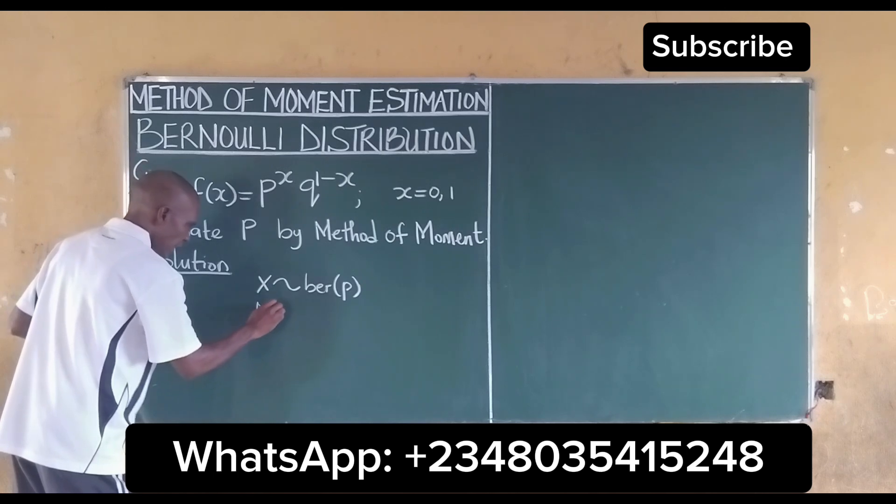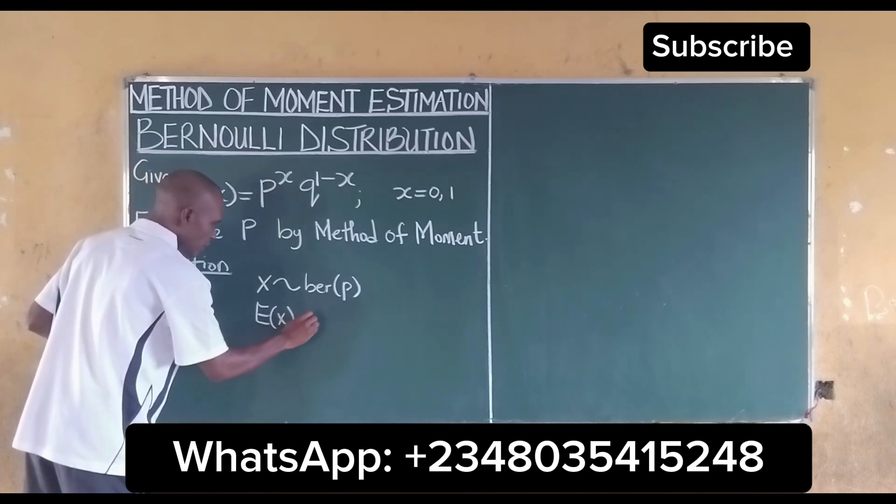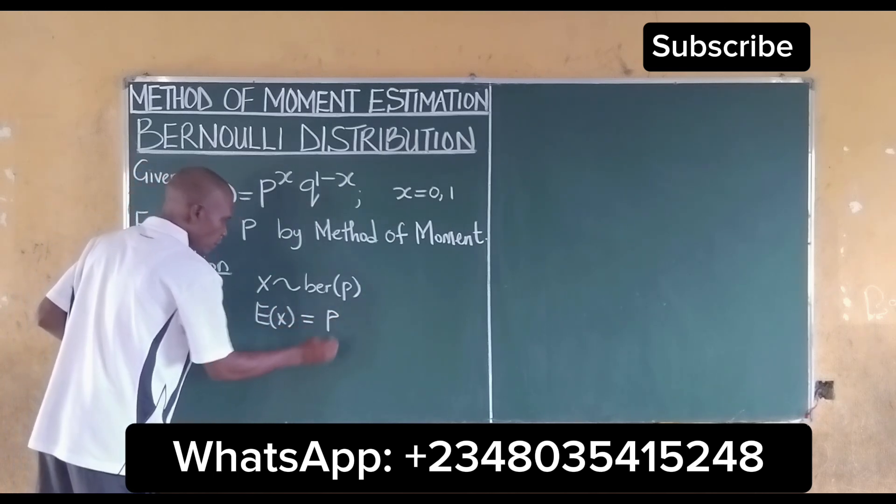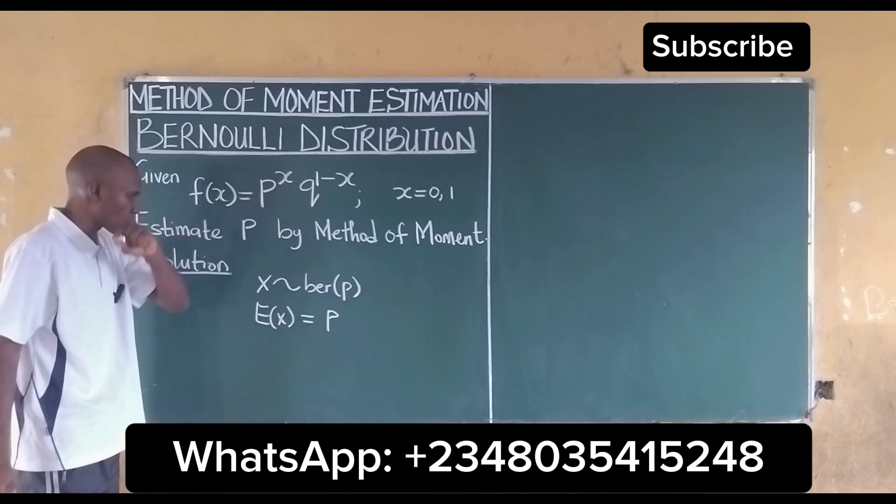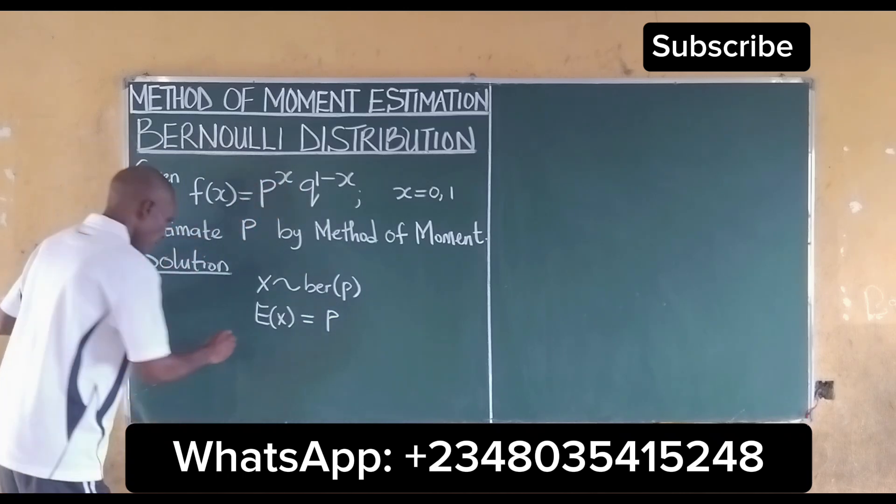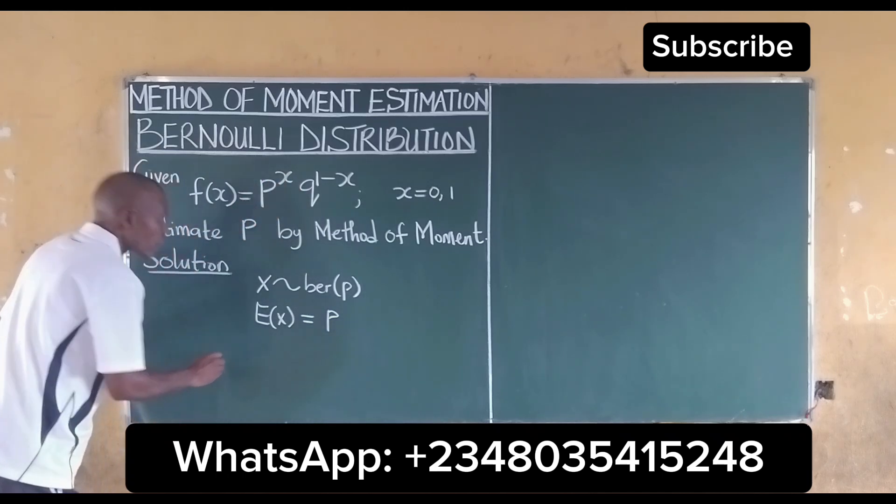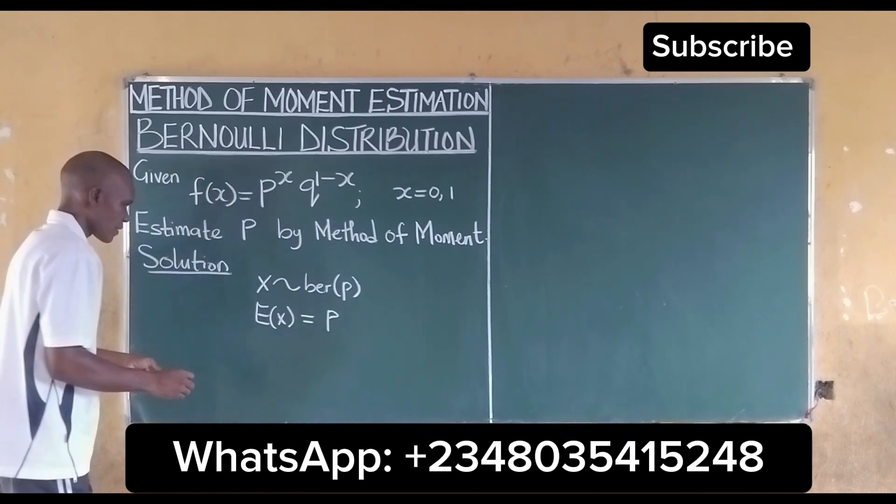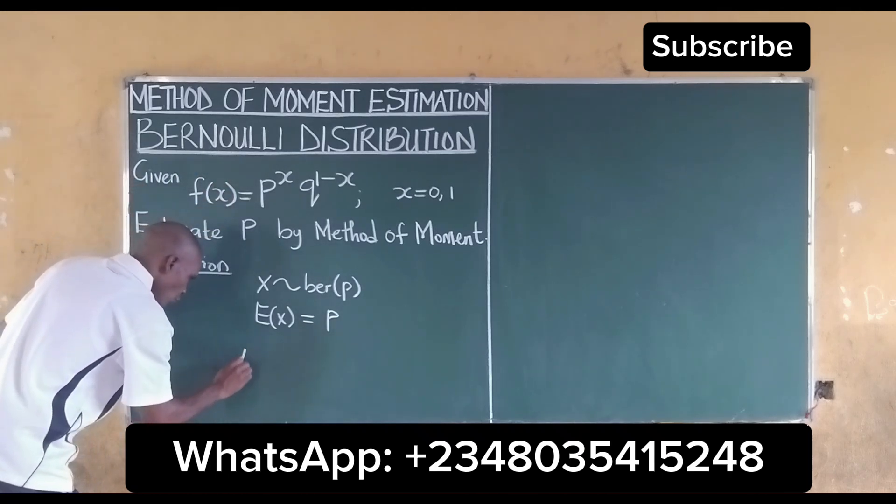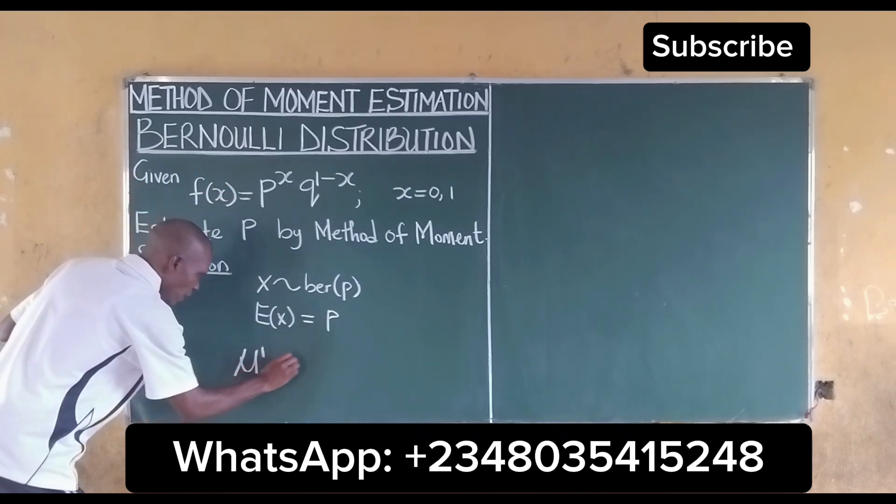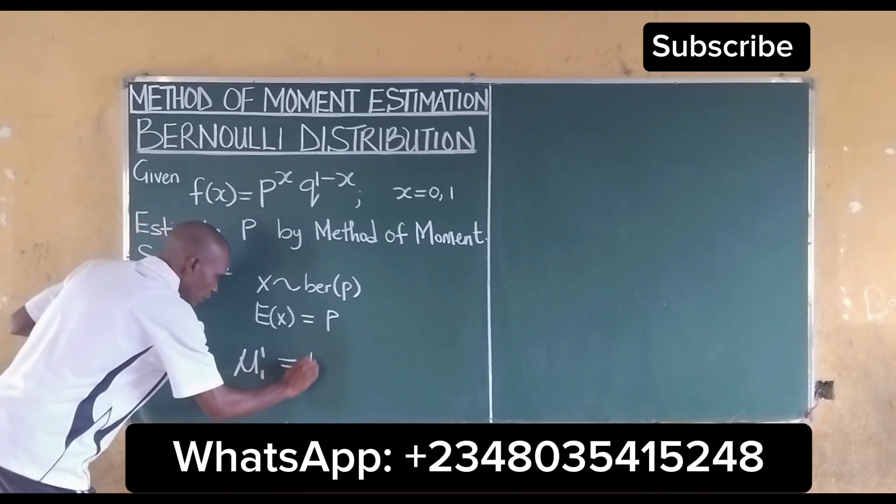It means that the expected value of X is equal to p for the Bernoulli distribution. Then for the method of moments, the solution to the method of moments is when the population mean is equal to the sample mean.